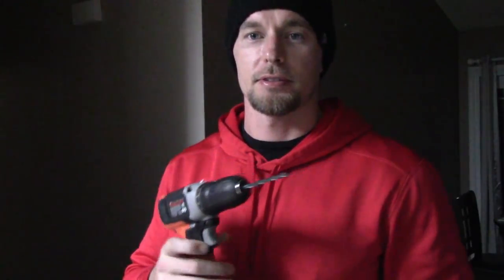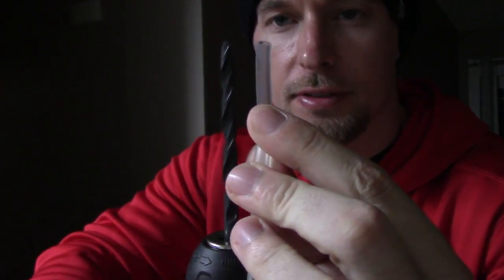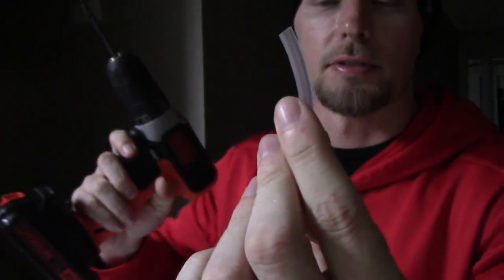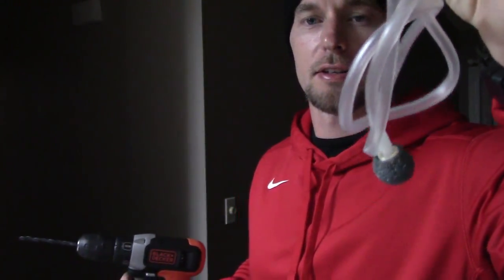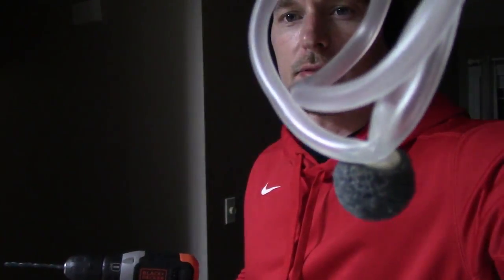So the only tools you're going to need to be able to do this is a power drill. Find a bit that matches the hose for your aerator relatively close. Because this is going to go through your lid down into the water. You're going to put your stone down in there. That's what's going to put off the bubbles for your bait fish.